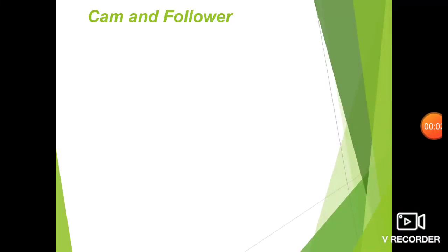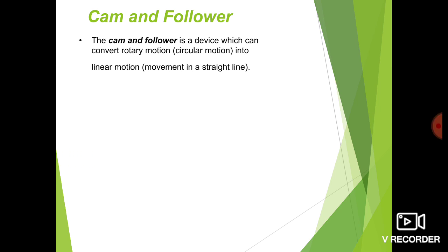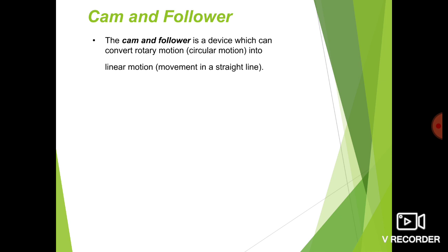Hello and welcome to my YouTube channel. In this video, I am going to discuss the topic that is cam and follower. The cam and follower is a device which can convert a rotary motion, that is circular motion, into a linear motion, that is movement in a straight line. Basically, cam and follower is used to convert the rotary motion into a reciprocating motion — that is the sole purpose of cam and follower.